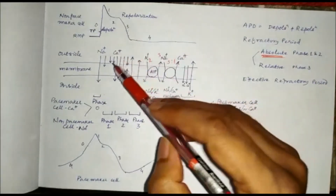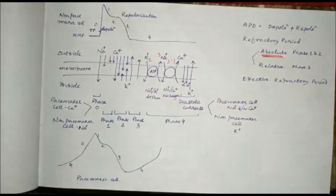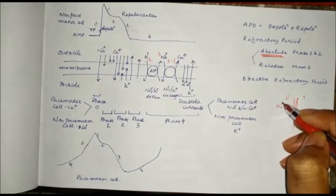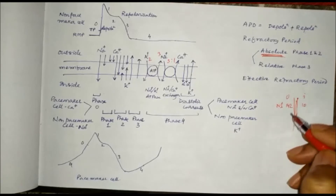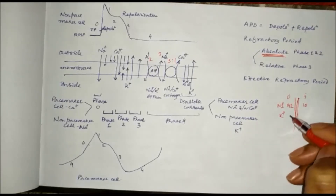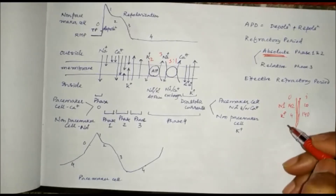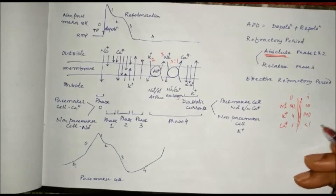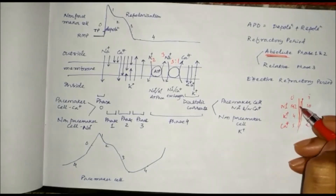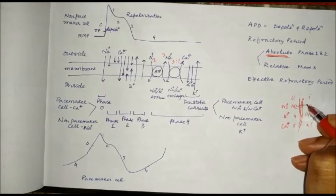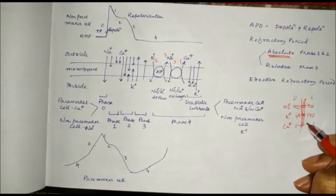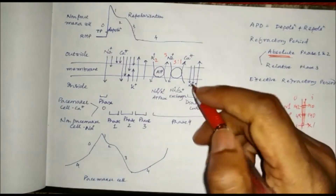Regarding ion distribution: sodium is present more outside the cell in a ratio of 142 to 10 (outside to inside). Potassium is the major intracellular ion, present more inside in a ratio of 4 to 140 (outside to inside). Calcium is present in a ratio of 5 to less than 1 (outside to inside). When sodium channels open, sodium enters the cell; when potassium channels open, potassium goes outside; when calcium channels open, calcium goes inside.